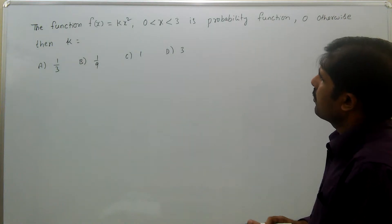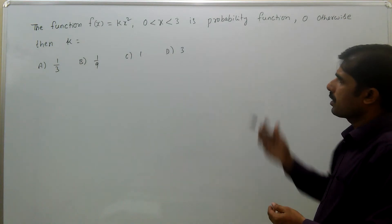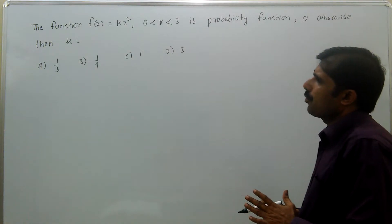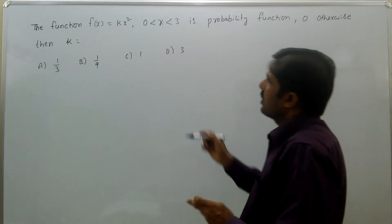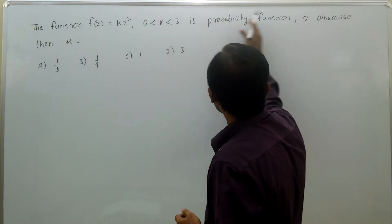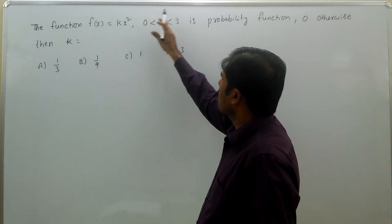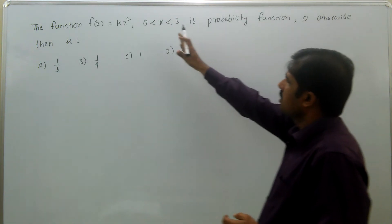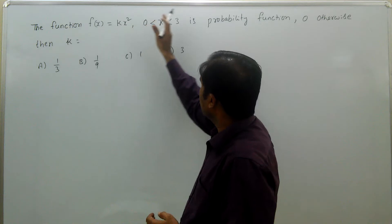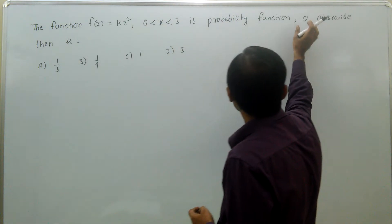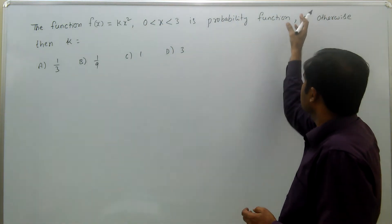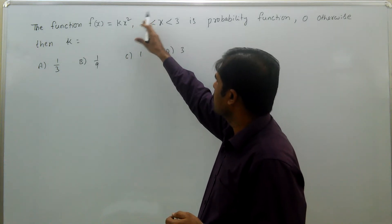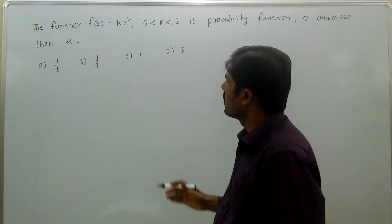Any probability density function, the total area under the curve must be 1. That means this probability density function ranges from 0 to 3. Otherwise it is 0. That means if x value less than 0 or more than 3, the probability density function has 0 value. The total probability function is varying from 0 to 3 only.